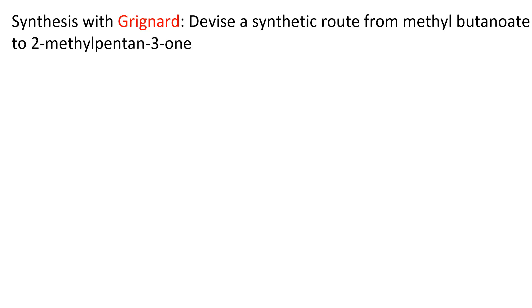Here's a multi-step synthesis that goes through alcohol intermediates and uses a Grignard reagent. We're going to devise a synthetic route to go from methyl butanoate, an ester, to 2-methylpentane-3-one, a ketone.